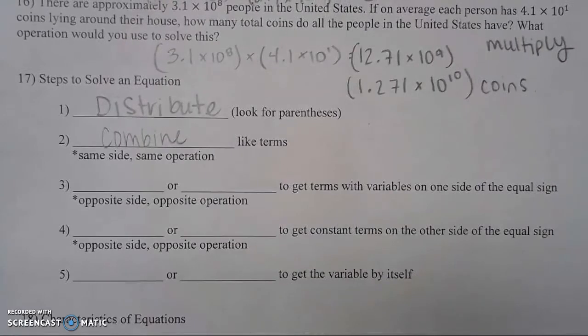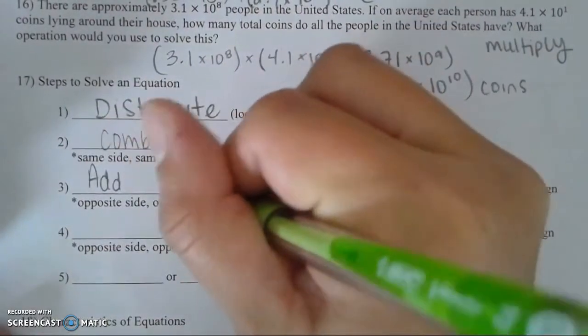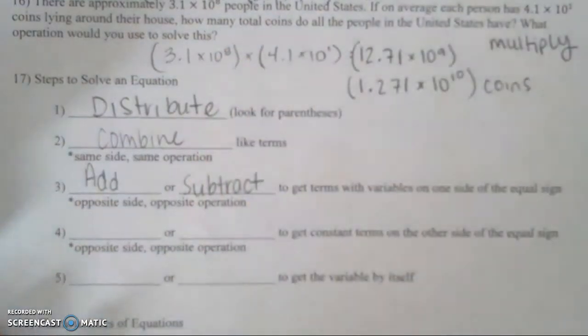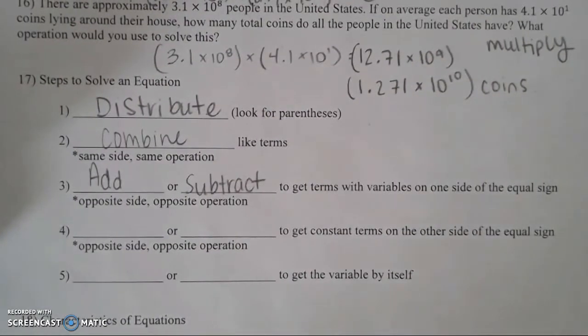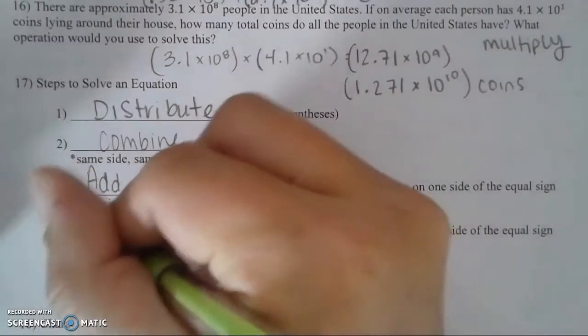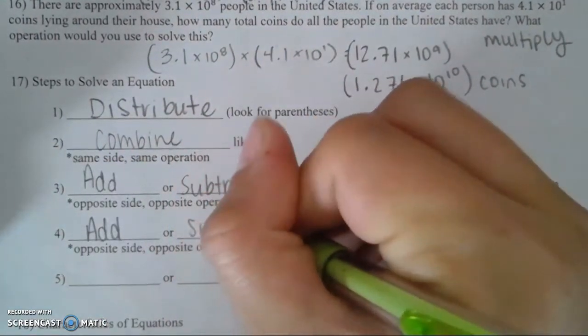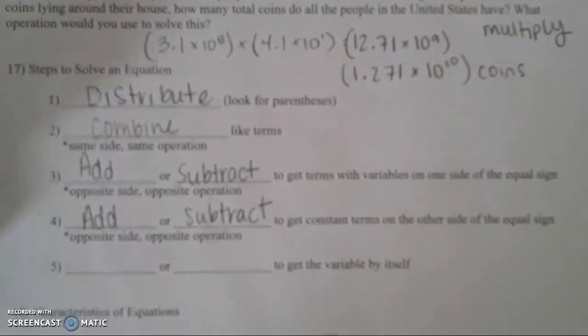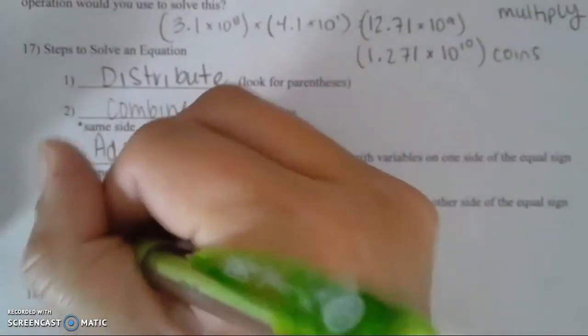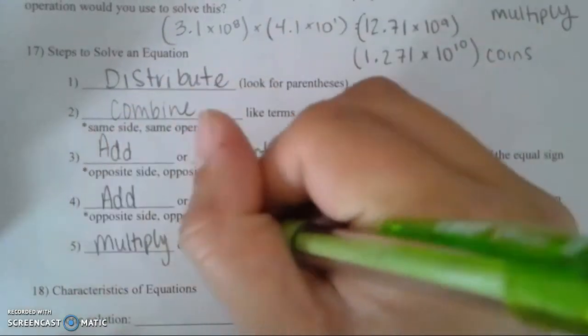If the terms are on different sides you'll be doing the opposite operation, so you will either add or subtract to get variable terms on one side of the equal sign. Then you'll do the same thing with the constant — add or subtract to get constant terms on the other side of the equal sign. The fifth step is to multiply or divide to get the variable by itself.